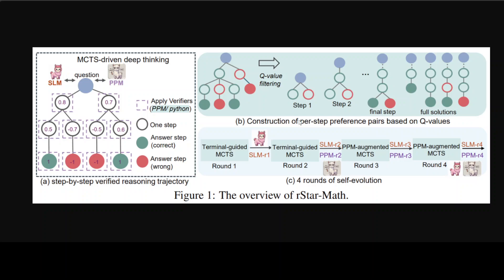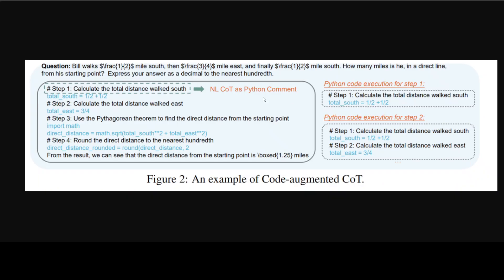There are three main components of this R-Star. First is the Policy Model, which is a small language model that generates possible next steps in the solution process. Then we have the Process Reward Model, which is another small language model that evaluates the quality of each step. And then we have this Monte Carlo Tree Search, which is the algorithm that explores different possible solutions and selects the best one.